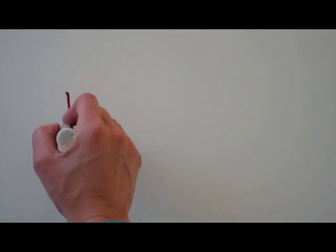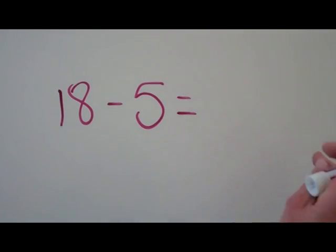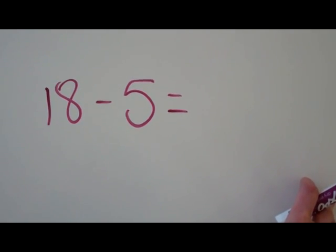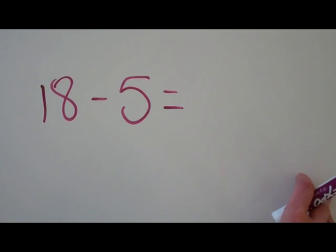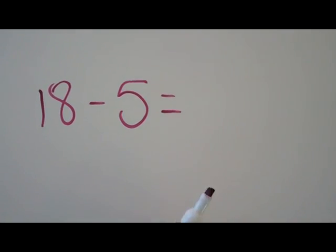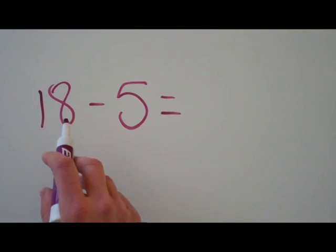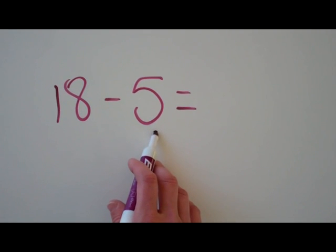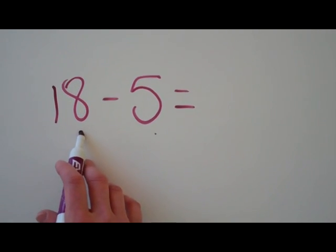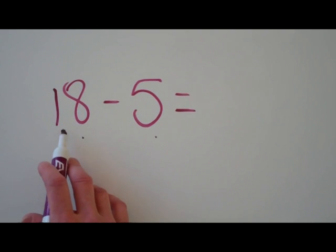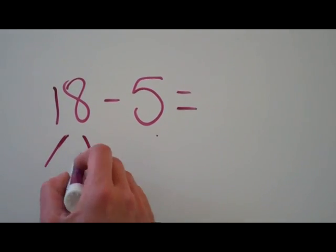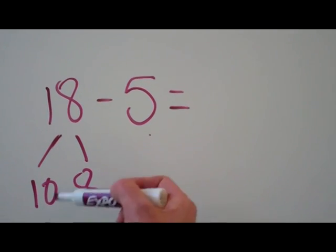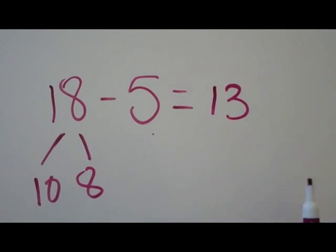Another way, 18 minus 5. For subtraction you can subtract ones from a 10 and ones when there's enough ones here. You can just subtract this one digit ones from your ones group without even messing with your 10. So basically you're looking at this like it's a 10 and an 8, you're not even touching that 10, and you can just look at 8 minus 5, so it's 13.